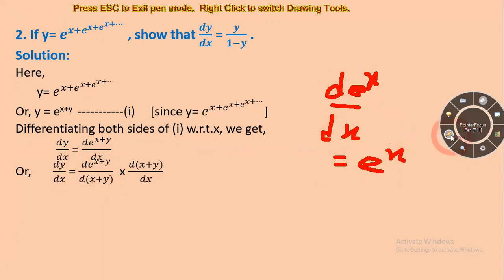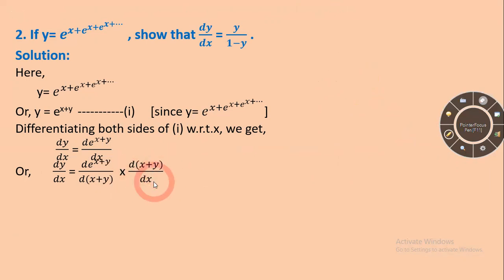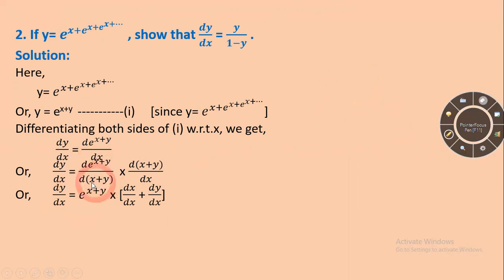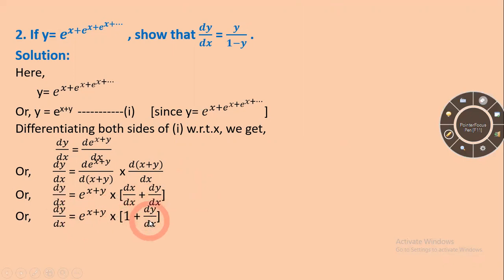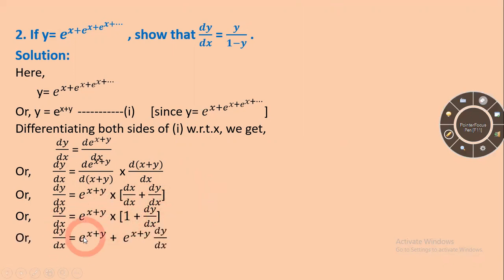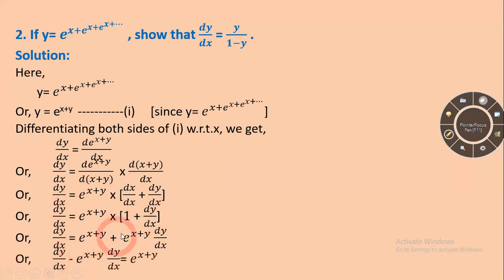Using the chain rule, the derivative of e^(x plus y) with respect to x gives e^(x plus y) times (d(x)/dx plus dy/dx), which equals e^(x plus y) times (1 plus dy/dx). So dy/dx equal to e^(x plus y) plus e^(x plus y) times dy/dx.